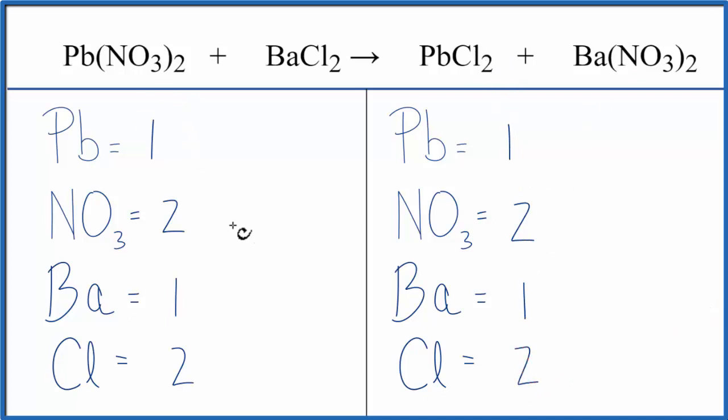When you look at the numbers on each side of the equation, you can see that this equation is already balanced. By counting this nitrate ion, this NO3 as one item, because it appears on both sides of the equation, that made it easy to count everything up and very accurate.